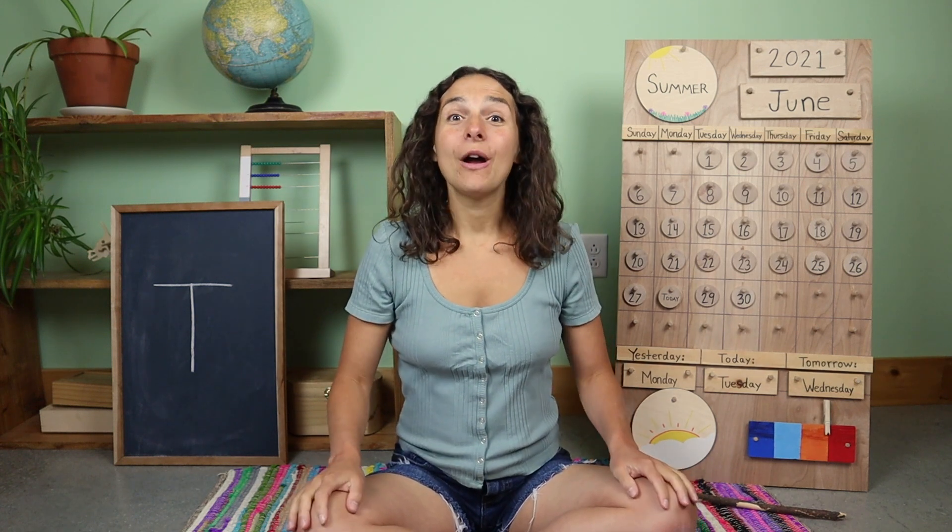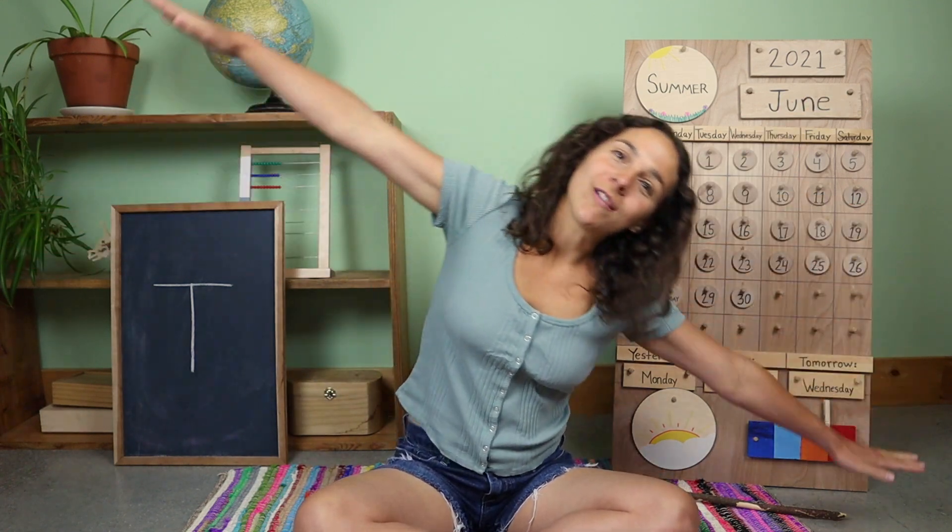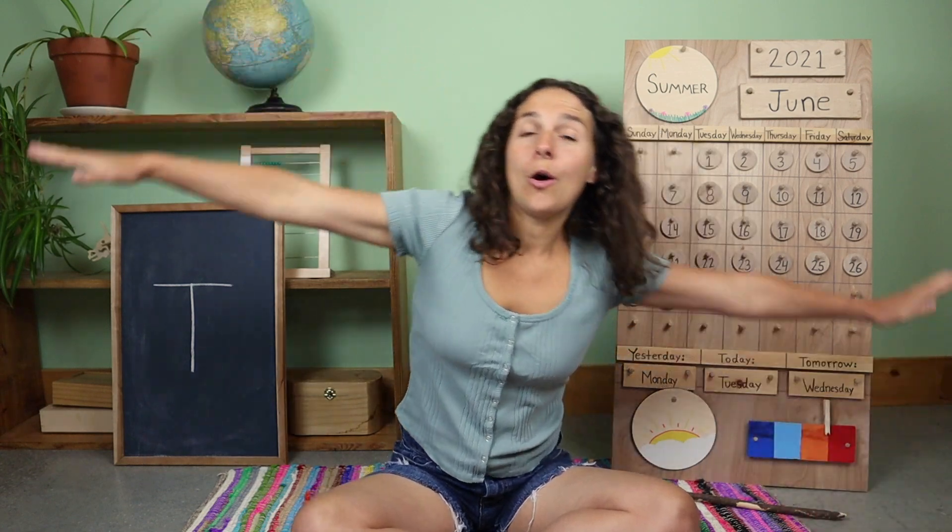Hello everyone and welcome back to Unbound Learners Pre-K. How are you doing today? That's great to hear. Are you ready to sing our good morning song together? Stretch your arms out like airplane wings. We'll fly to one side, over to the other side, fly back to the middle, and now take your airplane wings into a big circle out in front of you like this.